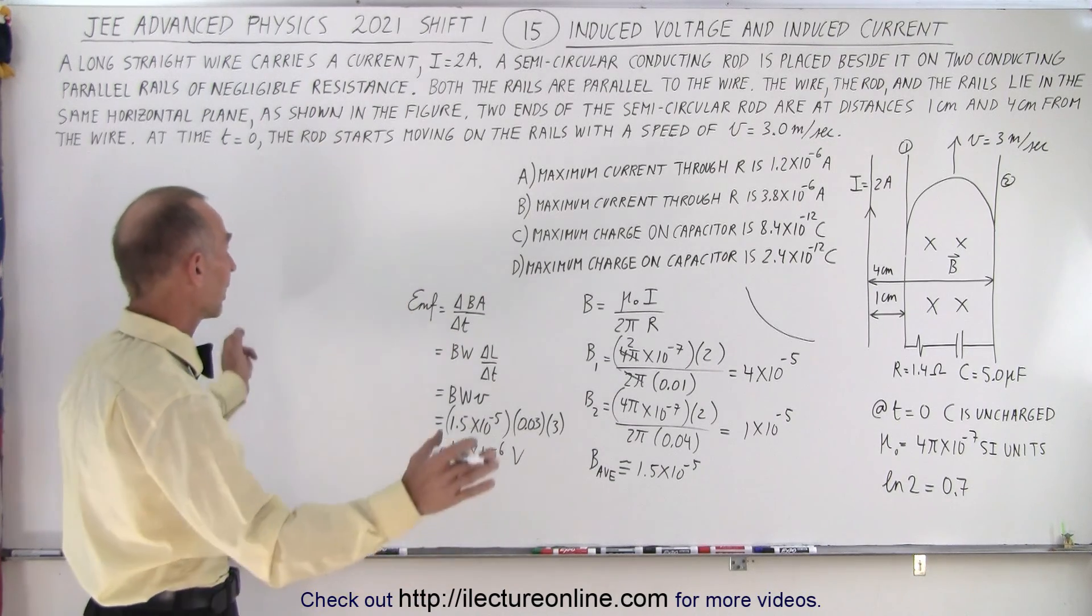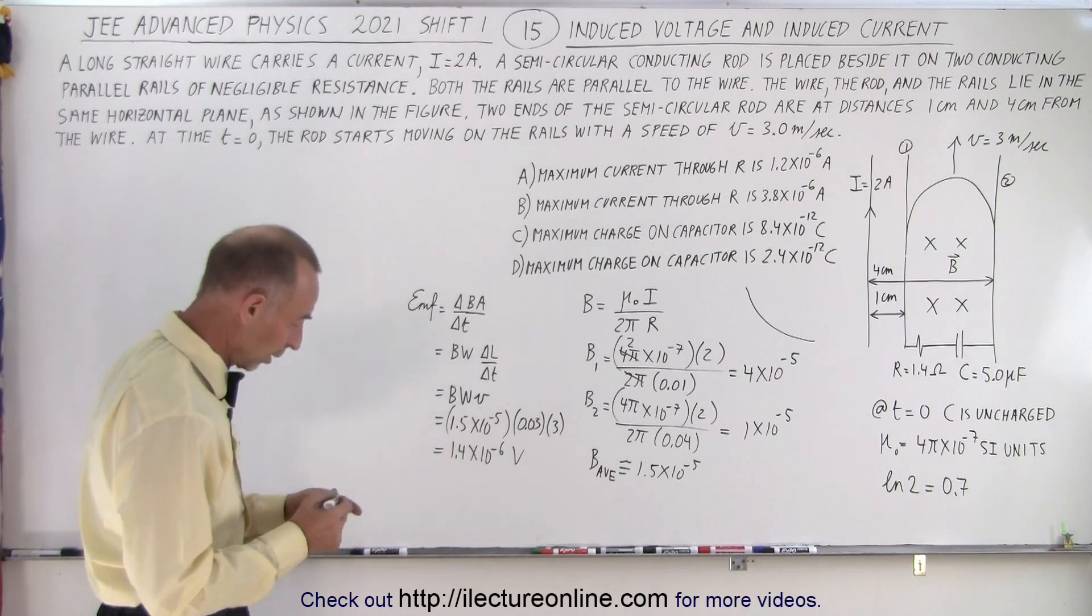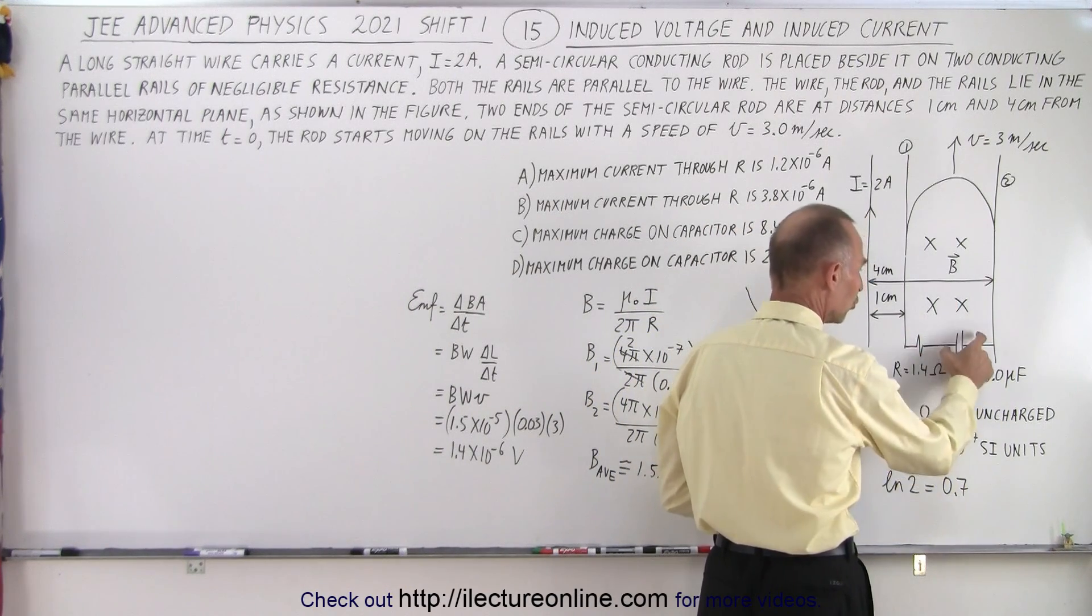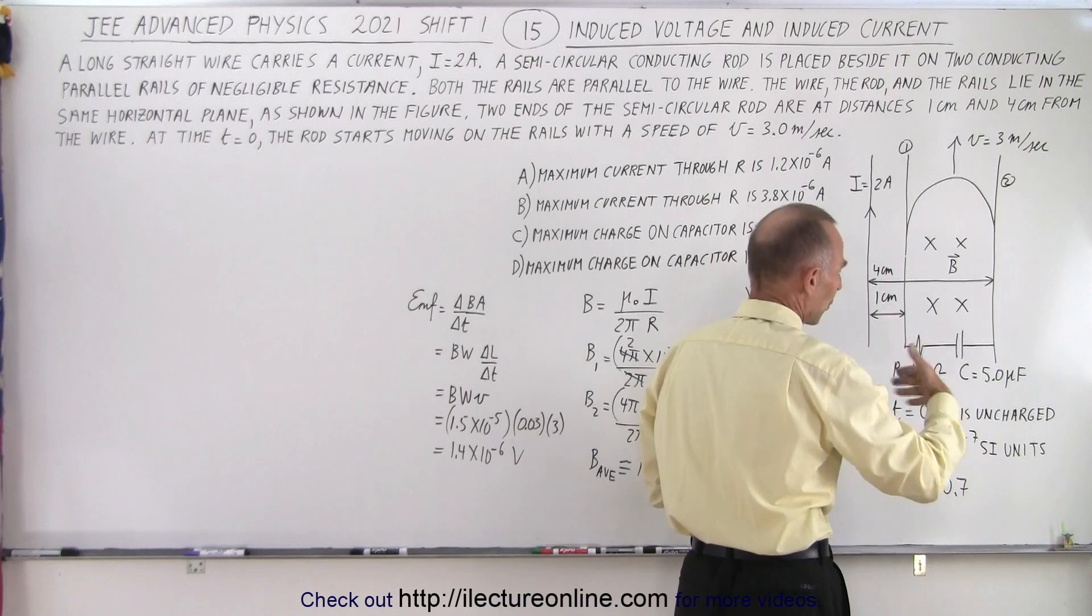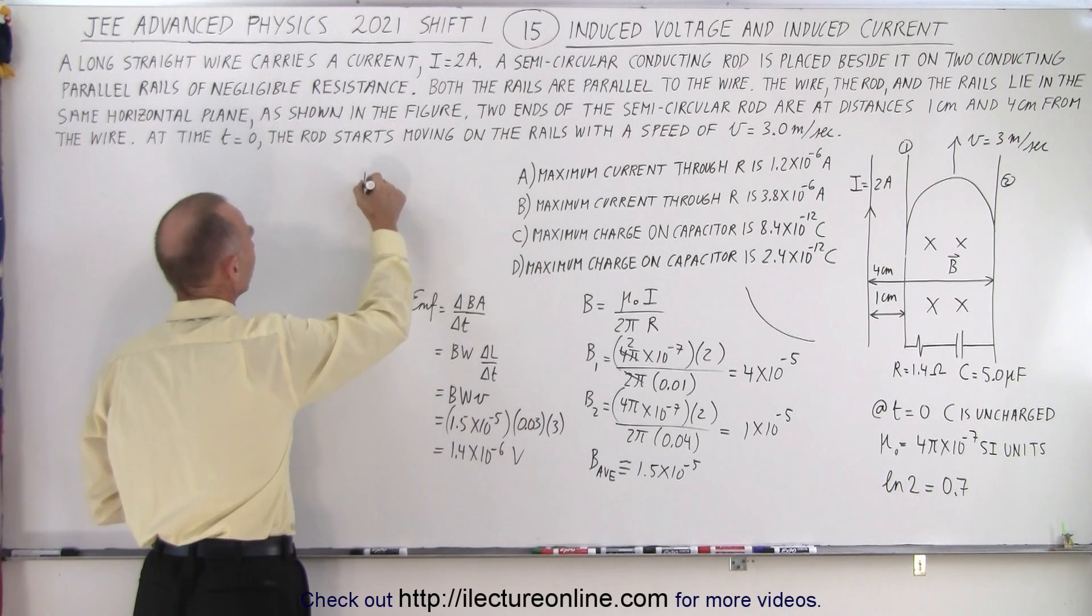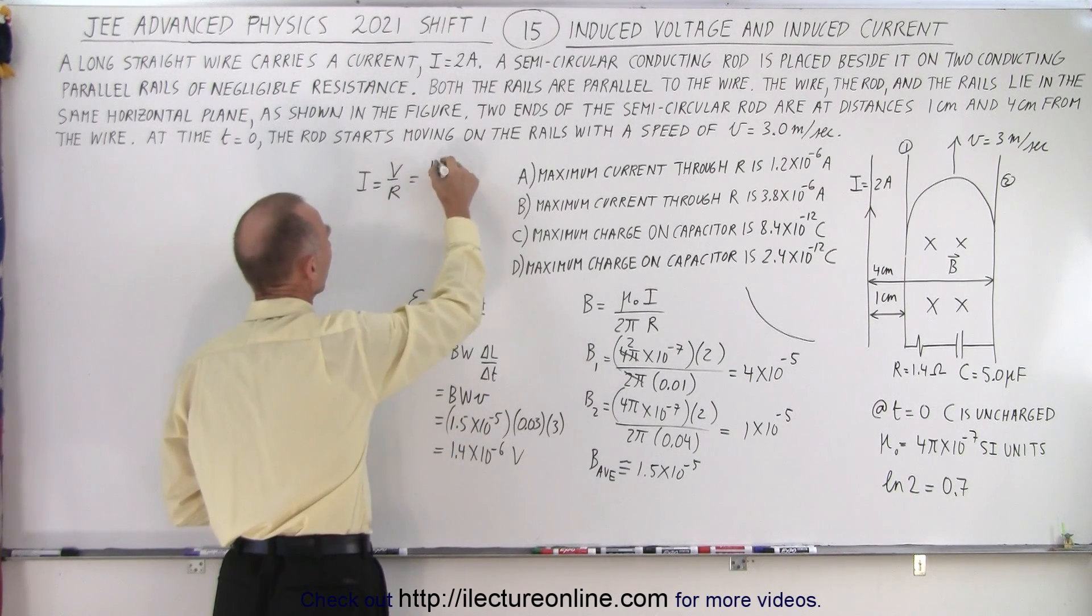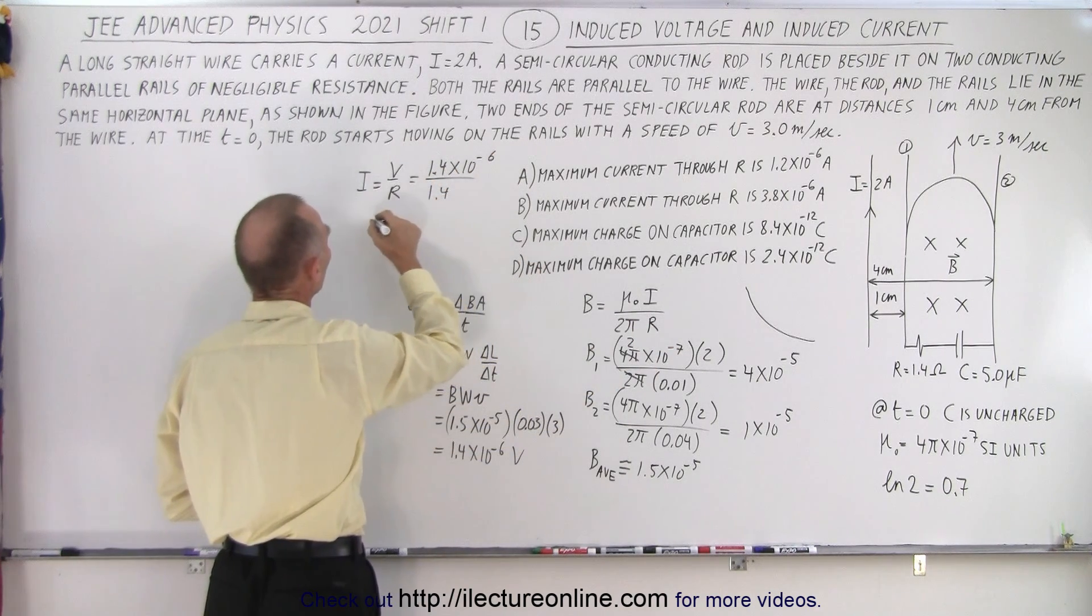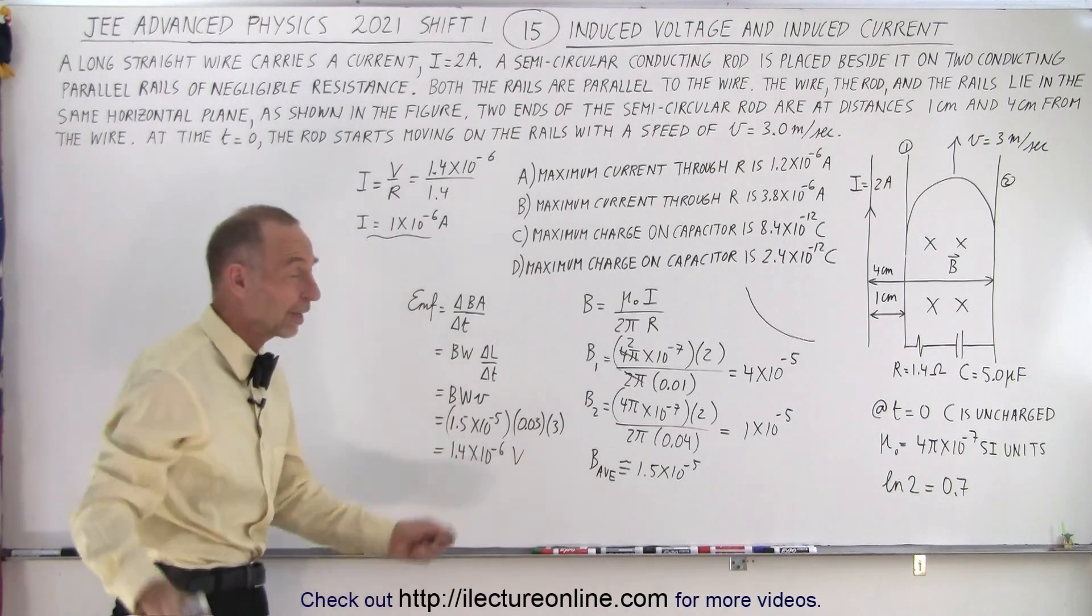We're not there yet. We have the EMF induced. Now we need to get the maximum current through R. Now the maximum current through the resistor is going to be obtained at T equals 0 when there's no charge yet on the capacitor. So essentially there's no charge so that's kind of like a closed circuit. After a while when the capacitor charges up the current will slow down. So we use Ohm's law and Ohm's law says that I equals V over R. In this case the induced voltage is about 1.4 times 10 to the minus 6 divided by the resistance of about 1.4 ohms. This gives us a current of about 1 times 10 to the minus 6 amps. Remember these are approximate values because we don't have a calculator.